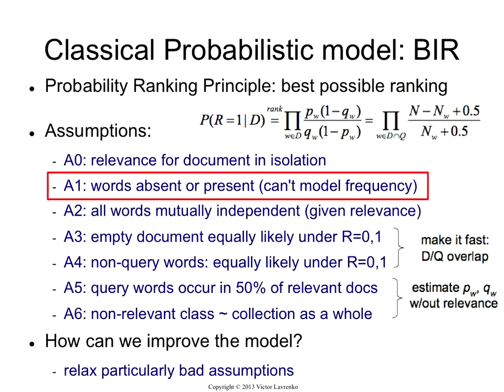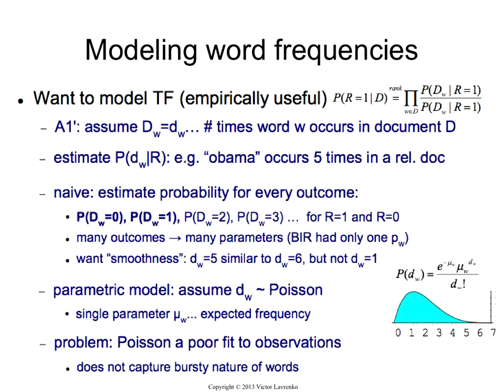Another assumption that people don't like is absence or presence of words. Here we're basically saying we can't model the word frequency, so let's see if we can relax that assumption. We want to model term frequency, and the reason we want to is because it is useful. When the word occurs multiple times in a document, that indicates that that document is about that term. Empirically, it is useful, and we want to be able to make use of it.